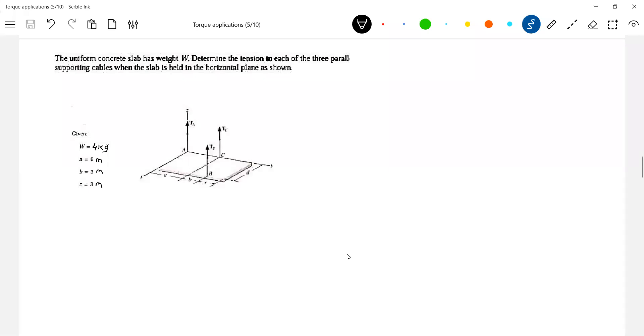Slab as weight W determines the tension in each of the three parallel supporting cables when the slab is held in a horizontal plane as shown. This is the x-axis or z-axis, this is the y-axis. The strings are vertical, directed along the y-axis here. It's asking to get the tension in each of the slab.